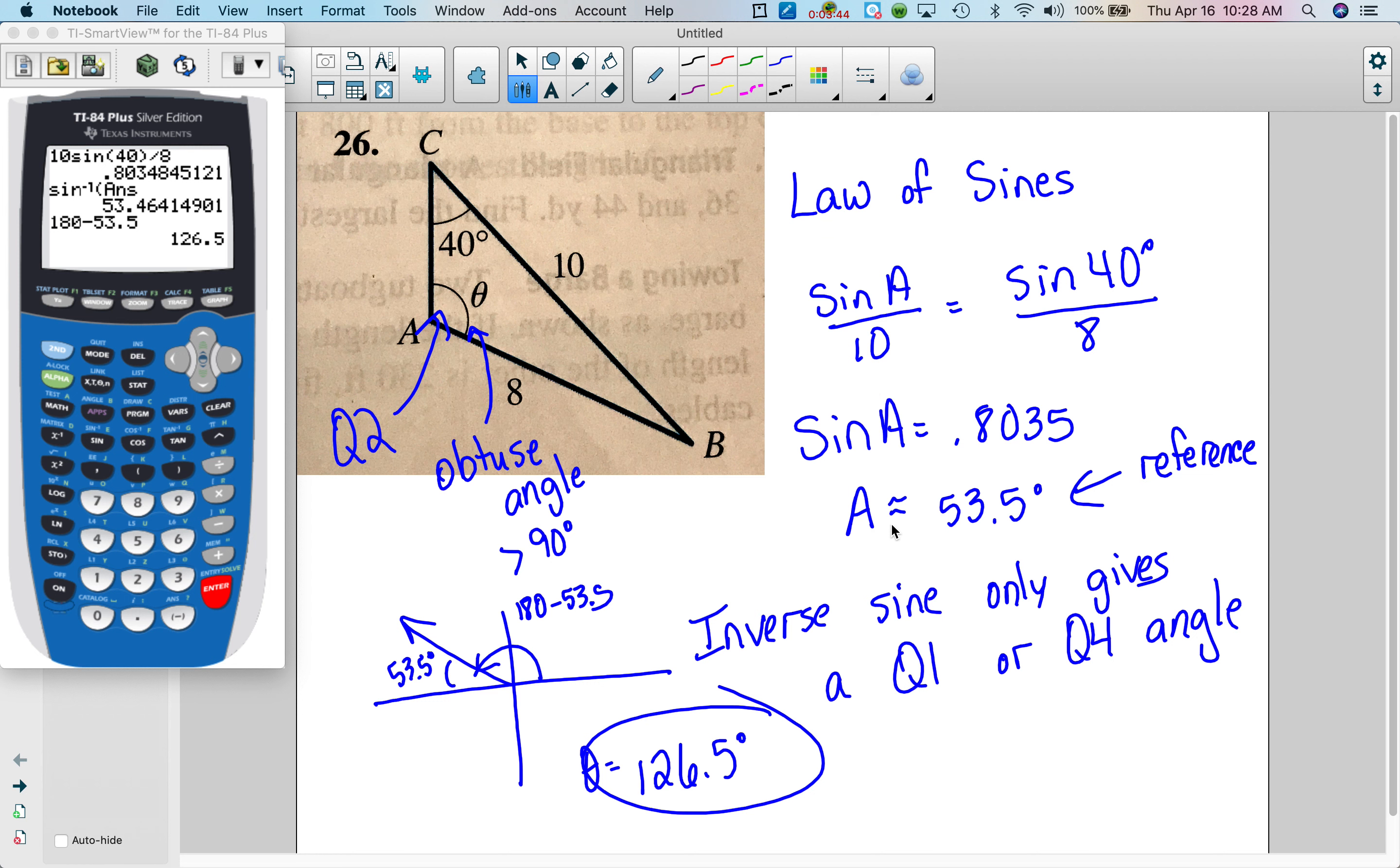This can happen when you are solving a triangle and you are doing inverse sine and your angle is bigger than 90 degrees. One of the things, and it hadn't come up yet so I hadn't talked about it, when I use inverse sine and I'm solving a triangle, I always solve for the small angles first. The smaller of the angles.